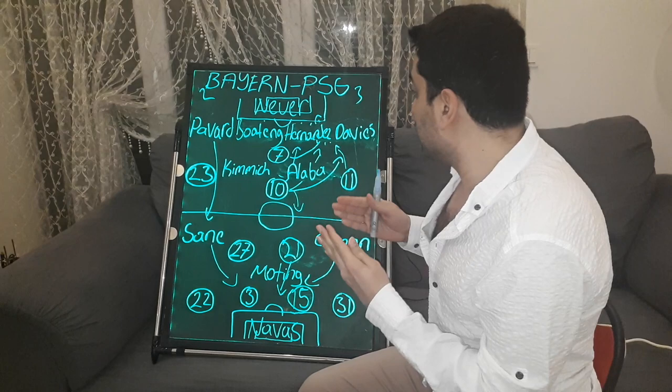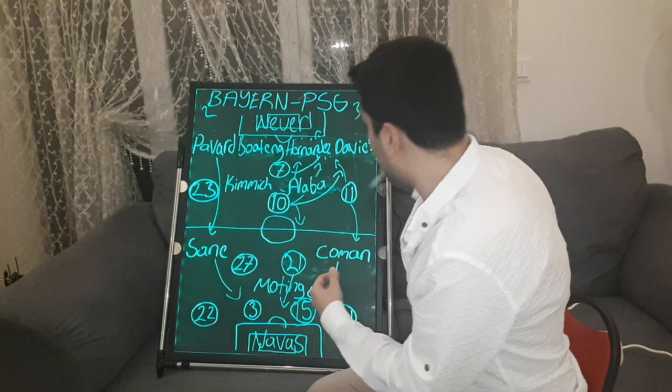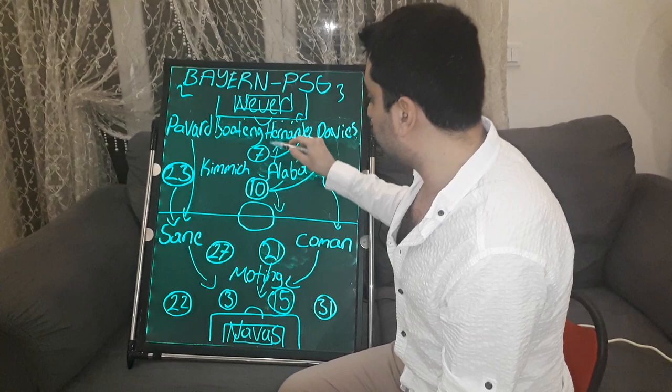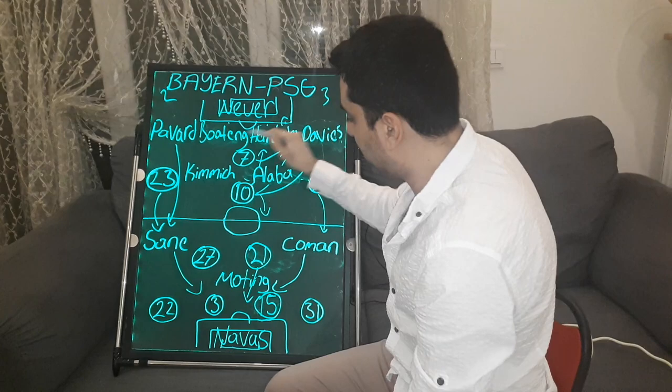Bayern started playing better, but Paris Saint-Germain continued to develop dangerous counter-attacks with Mbappe and Neymar. In their defensive shape, Di Maria dropped to the right of midfield and Draxler came back to the left, so PSG played in a 4-4-2 with Mbappe and Neymar pressing Bayern's central defenders. The first half finished 2-1 to PSG.